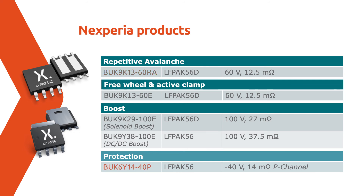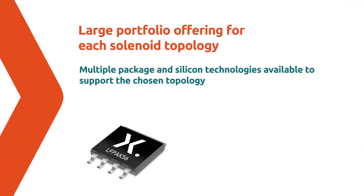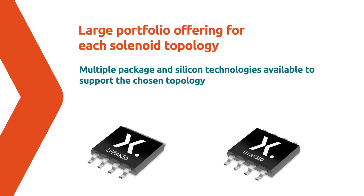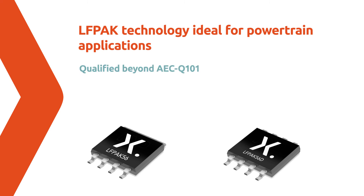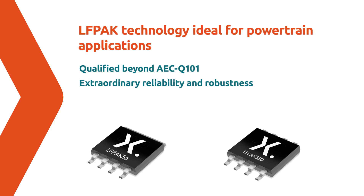The demo also uses a product from our LFPAK56 P-channel family, working as the reverse battery protection MOSFET. Nexperia provides ease of choice with multiple package and silicon technologies available to support the chosen topology. Our ASFETs for repetitive avalanche topologies are designed with guaranteed repetitive avalanche performance, tested up to 1 billion cycles, and enhanced data sheets to support the designs. LFPAK automotive MOSFETs have industry-leading performance, exceeding AEC-Q101 qualifications up to two times. The unique copper clip construction provides excellent robustness and reliability for the most demanding applications, as well as space-saving benefits when comparing them to more traditional alternatives.